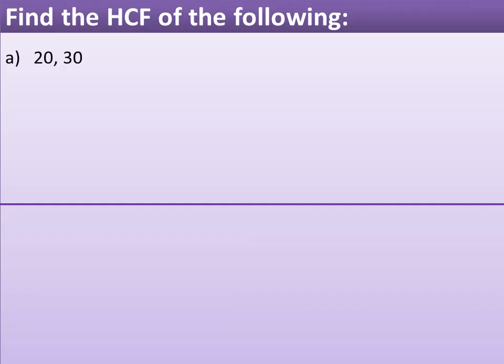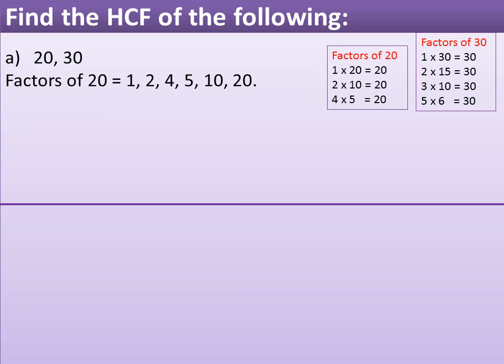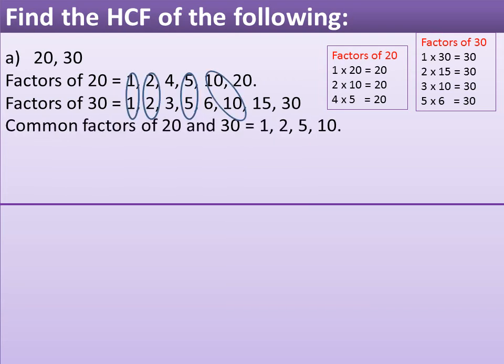Find the HCF of 20 and 30. Step 1: Factors of 20 are 1, 2, 4, 5, 10, and 20. Factors of 30 are 1, 2, 3, 5, 6, 10, 15, and 30. Step 2: Common factors of 20 and 30 are 1, 2, 5, and 10. Step 3: HCF of 20 and 30 is equal to 10.